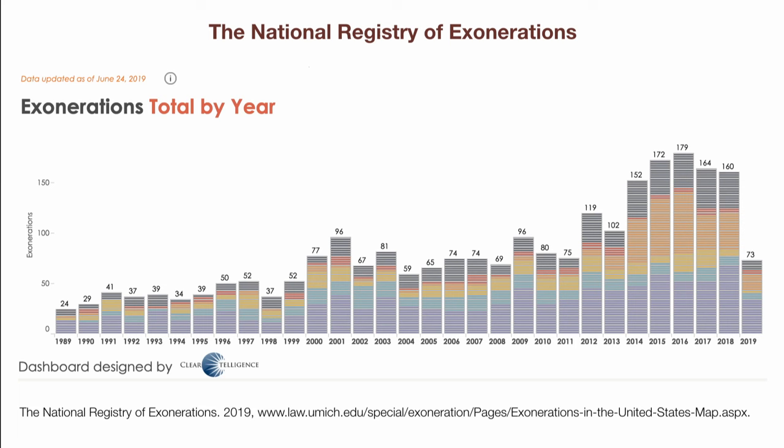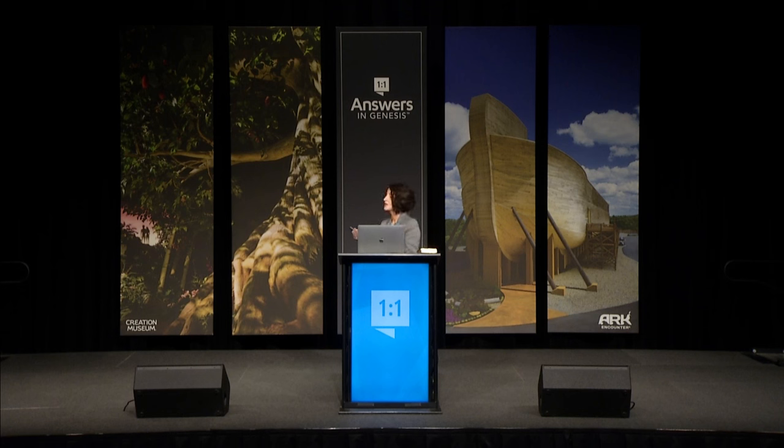So because mistakes can be made, there actually is an organization — the National Registry of Exonerations — whose goal is to, as technology improves and our understanding of DNA has drastically improved, go back and test evidence again to see if mistakes have been made. They have been doing this since 1989. As of June 24th, 2019, 73 people have been exonerated for crimes they were not guilty of. Just as a forensic scientist can make mistakes about evidence they interpret, so can geologists when they look at fossil evidence — it largely has to do with your worldview.